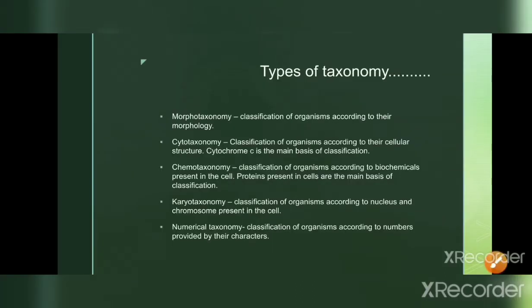The types of taxonomy include morphotaxonomy, cytotaxonomy, chemotaxonomy, karyotaxonomy, and numerical taxonomy. In morphotaxonomy, we study the form and structure of organisms — their morphological or external characters — without studying their functional or genetical aspects. Organisms are classified based solely on their morphological characters.